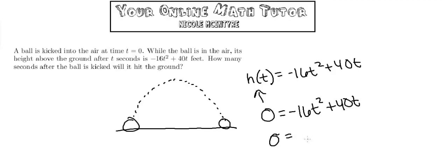Going from here, I'll factor out a t, so I get t times (negative 16t plus 40).